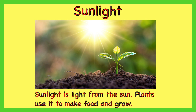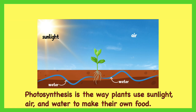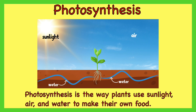Sunlight. Sunlight is light from the sun. Plants use it to make food and grow. Photosynthesis. Photosynthesis is the way plants use sunlight, air, and water to make their own food.